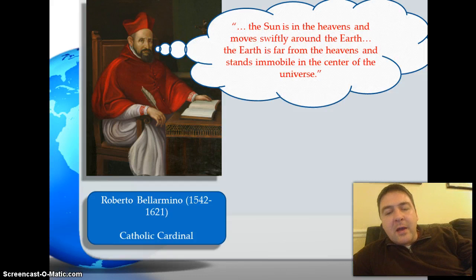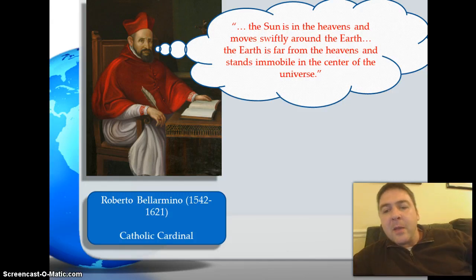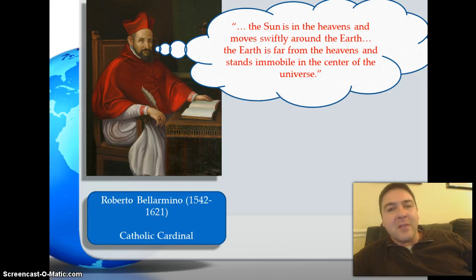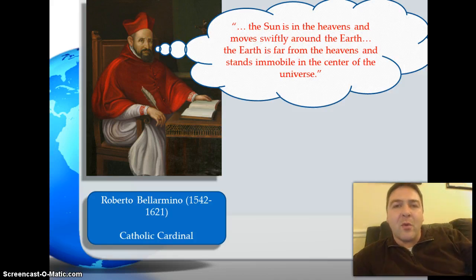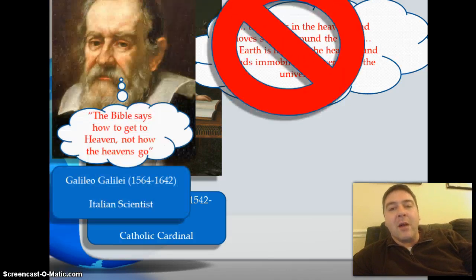We see here the important Italian cardinal Roberto Bellarmino, who gives the quote: 'The sun is in the heavens and moves swiftly around the earth. The earth is far from the heavens and stands immobile in the center of the universe.' He is summarizing the Catholic Church's view, which places the Earth at the center and the sun as something revolving around it.